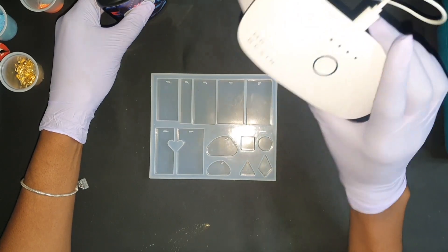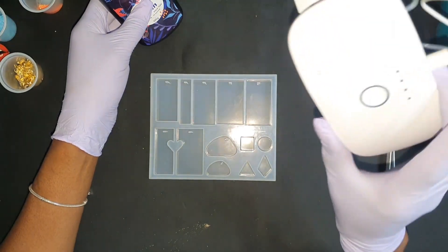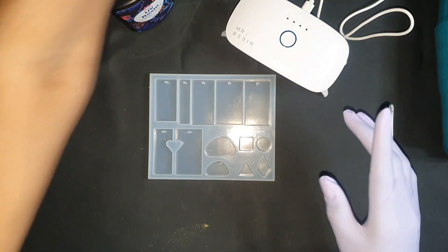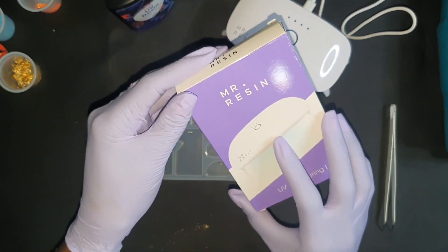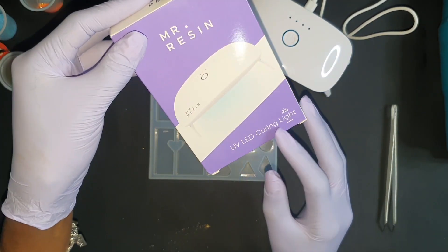So of course with UV resin you need a UV lamp. This I purchased on Amazon and this one is the brand Mr. Resin, so it's a UV LED curing light.